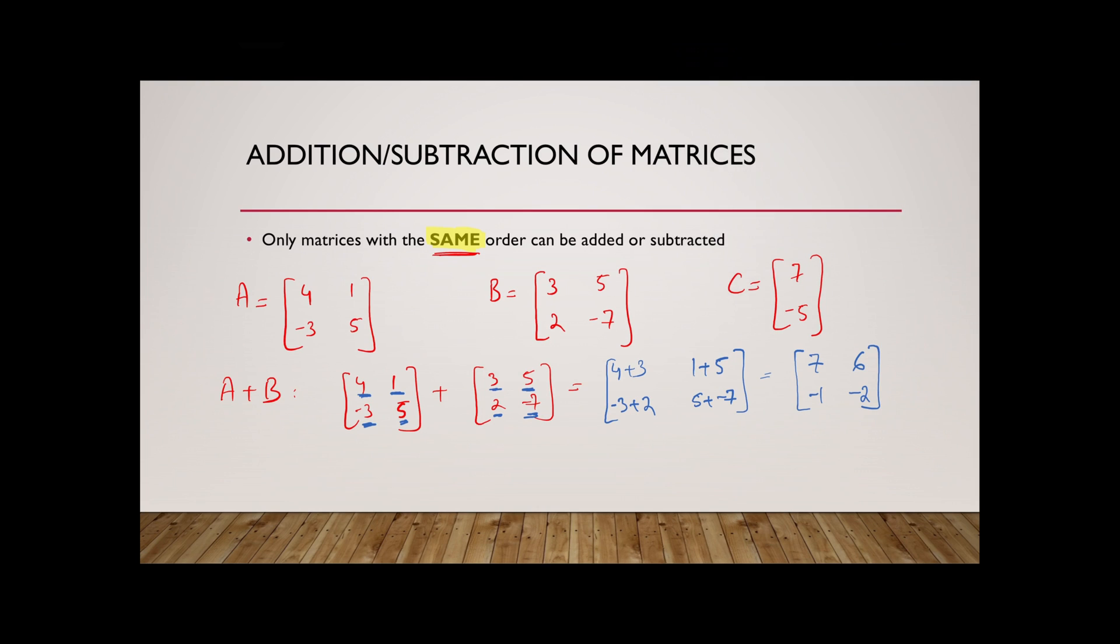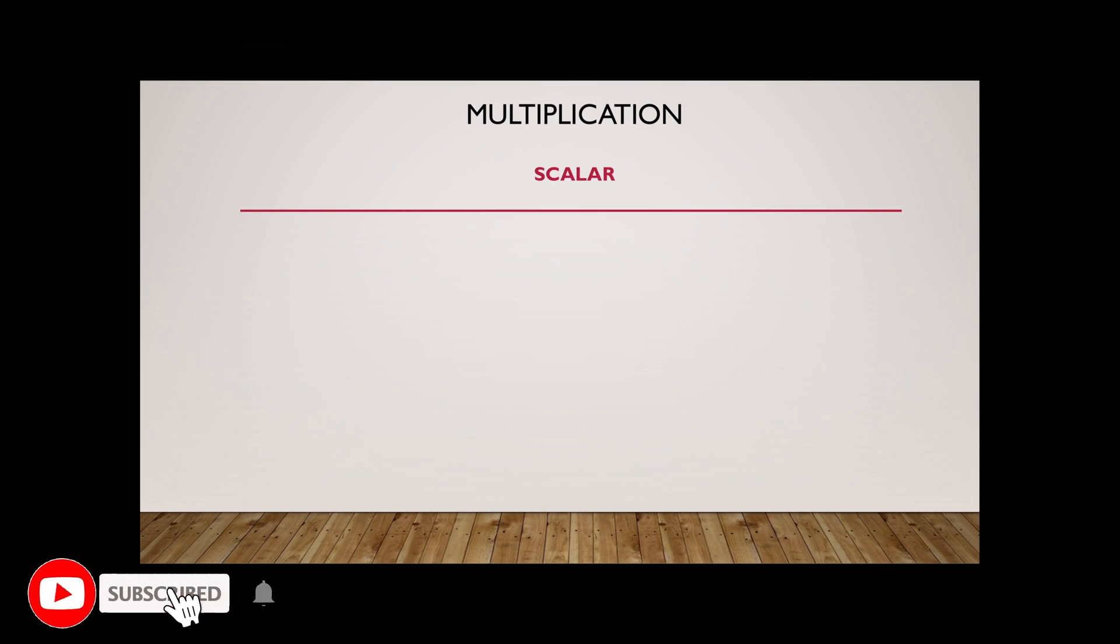Now suppose the question had asked me to figure out A plus C, if possible. So, well, obviously my answer is going to be not possible because even if I try to add the two matrices, the question is, how can I add if the order doesn't match? It doesn't make sense. I mean, what should I add 4 to? What should I add 1 to? It makes no sense. So I'm just going to write that this is not possible. So long story short, if you want to be able to add or subtract two matrices, they need to have the same order.